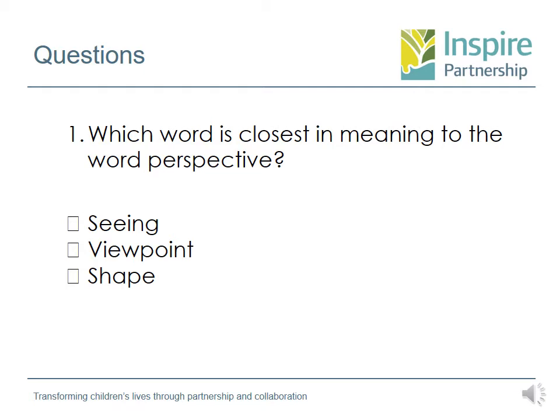For your first question on your home learning, it says: which word is closest in meaning to the word perspective? Have a look through the text, find where it is mentioning perspective in the core text, read around it, and then you need to tick to say whether it is scene, viewpoint, or shape. If you're really not too sure, once you've read around the text, perhaps you could get yourself a dictionary or a thesaurus to help you answer this question.